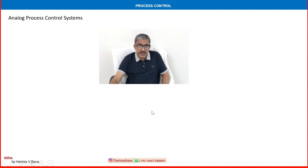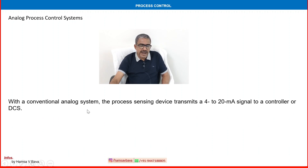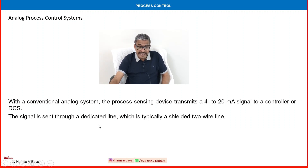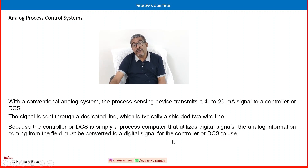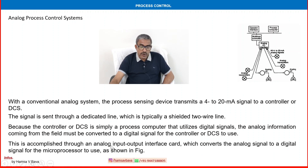With a conventional analog system, the process sensing device transmits a 4 to 20 milliamp signal to a controller or DCS. The signal is sent through a dedicated line, typically a shielded two-wire line. Because the controller or DCS is a digital process computer, the analog information coming from the field must be converted to a digital signal. This is accomplished through an analog input-output interface card, which converts the analog signal to a digital signal for the microprocessor to use.